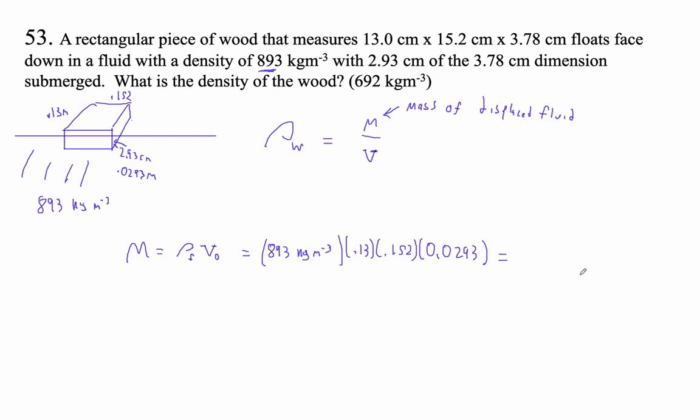Okay, so we got this. 893 times 0.13 times 0.152 times 0.0293. The mass of the fluid displaced is 0.517018 kilograms. That's the mass.